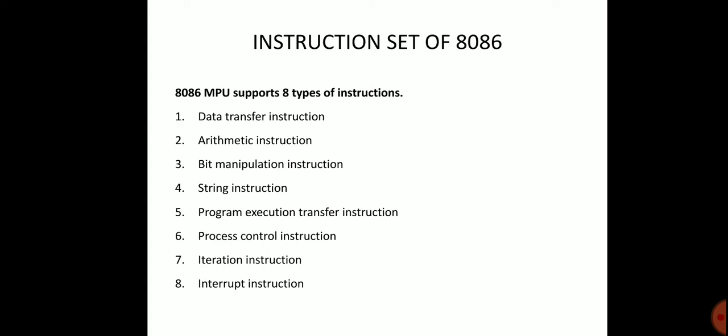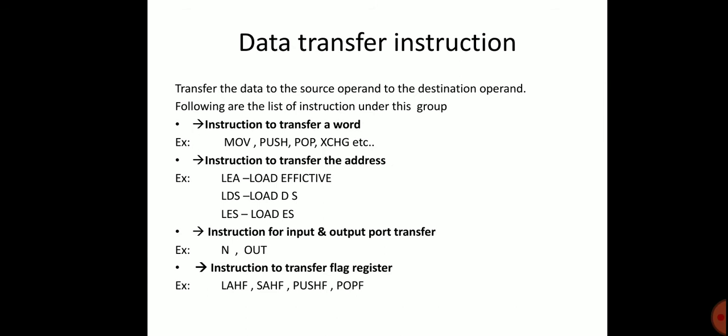The first group is Data Transfer Instructions, which transfer data from a source operand to a destination operand. Instructions used to transfer a word — that is, a 16-bit word of data — include MOV, PUSH, POP, and XCHG (exchange).